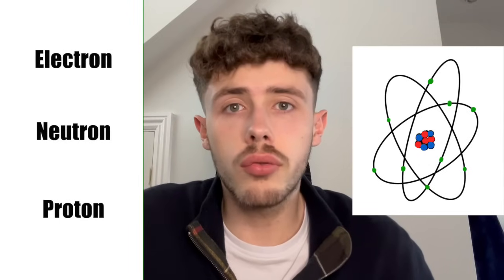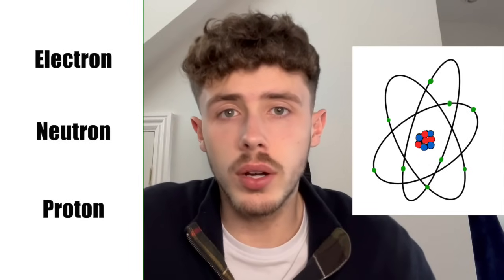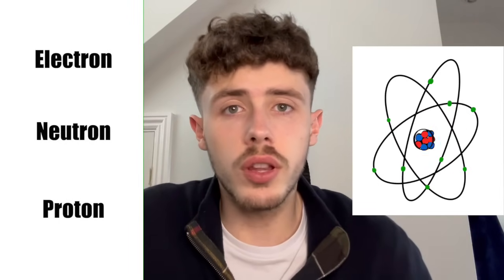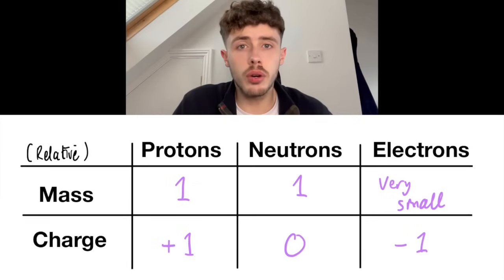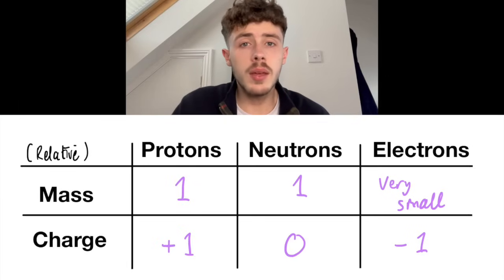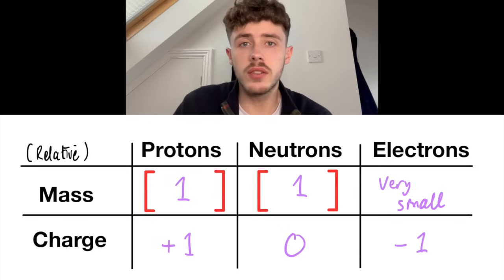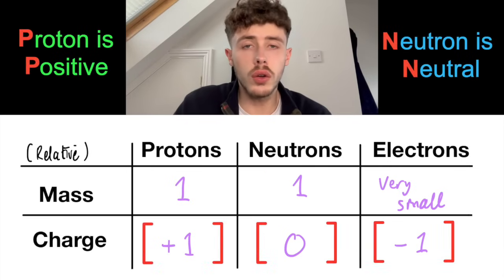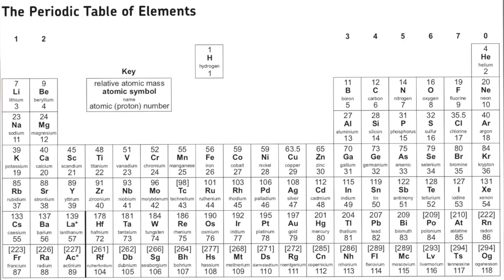Within an atom there are 3 subatomic particles: the electron, the neutron, and the proton. You need to know these properties from this table like the back of your hand. Key points involve the proton and neutron having a relative mass of 1, and make sure you understand the different charges on each of the subatomic particles.